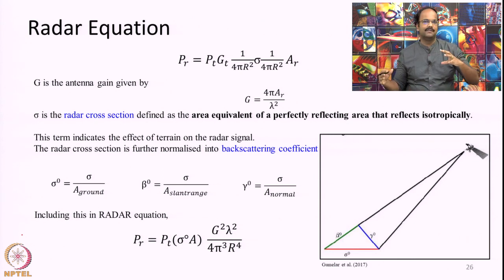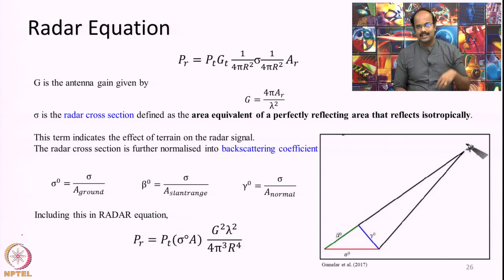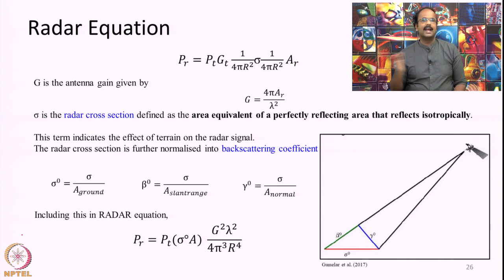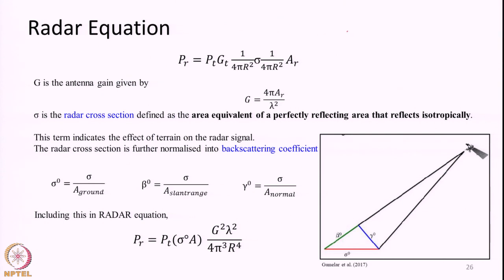Whatever reflection or scattering happens in any direction other than back towards the antenna will not be collected by this particular sensor. We call this back-scattering. Essentially the radar antenna measures what is known as back-scattering — that is, how much energy is being scattered back by the object towards the sensor itself. Normally when you look at any scientific literature related to radar remote sensing you will have this term back-scattering commonly being referred to.